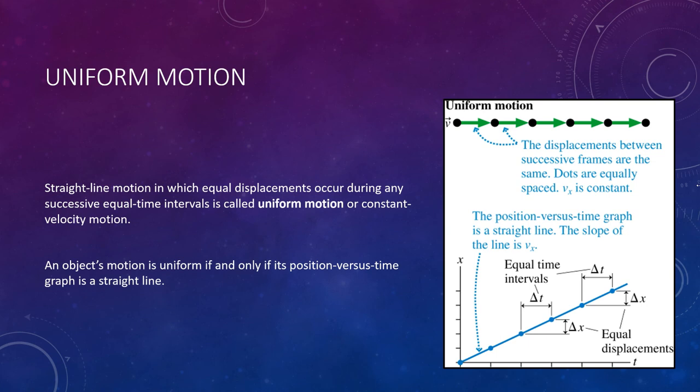If you drive your car on a straight road at a perfectly steady 60 miles per hour, you will cover 60 miles during the first hour, 60 miles during the second hour, yet another 60 miles for the third hour, and so on. This is an example of what we call uniform motion — straight line motion at a constant speed. Equal displacements occur during any successive equal interval of time, which is what we call uniform motion, or constant velocity motion.